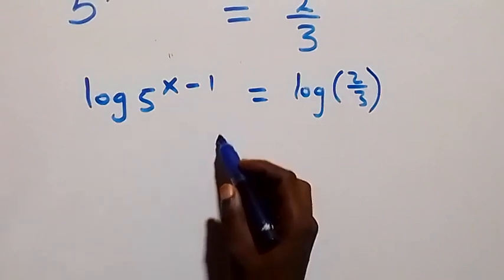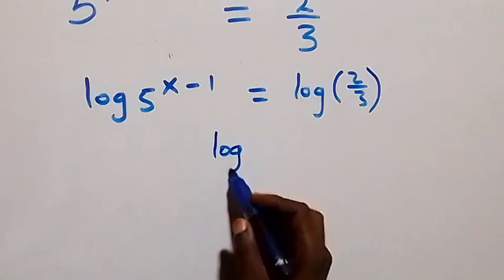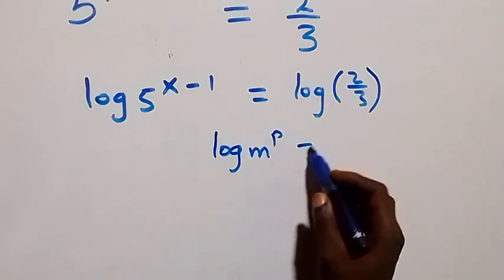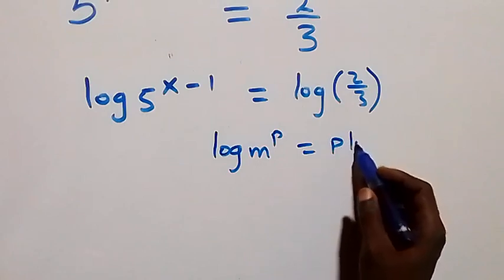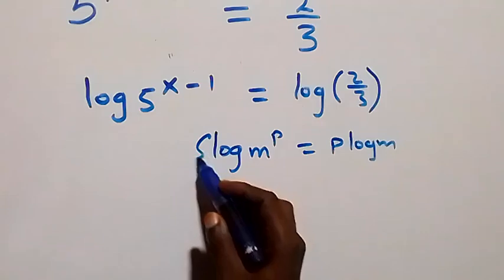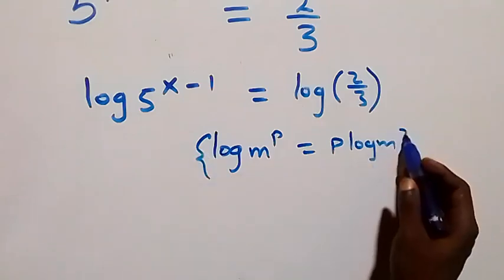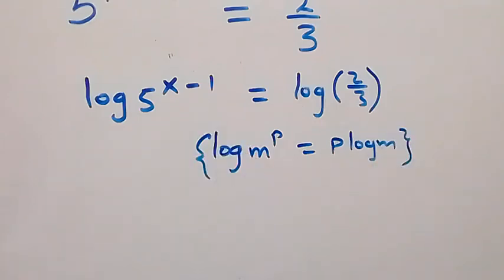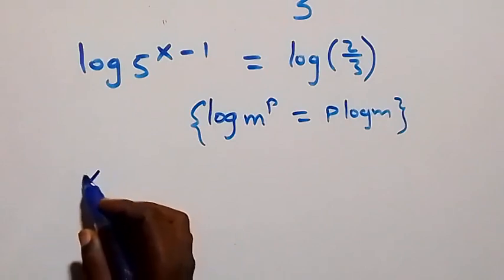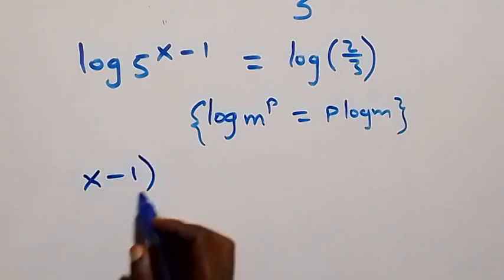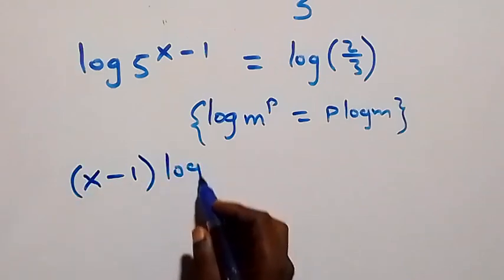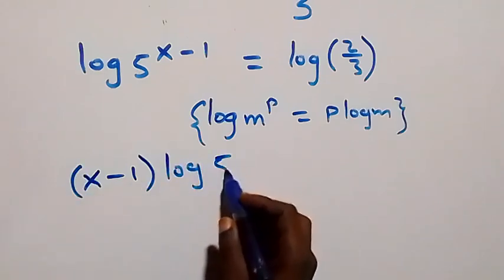We apply the power law of logarithm: log m raised to power p can be written as p times log m. The power here is x minus 1, so this becomes x minus 1 multiplied by log 5, equals log of 2 over 3.